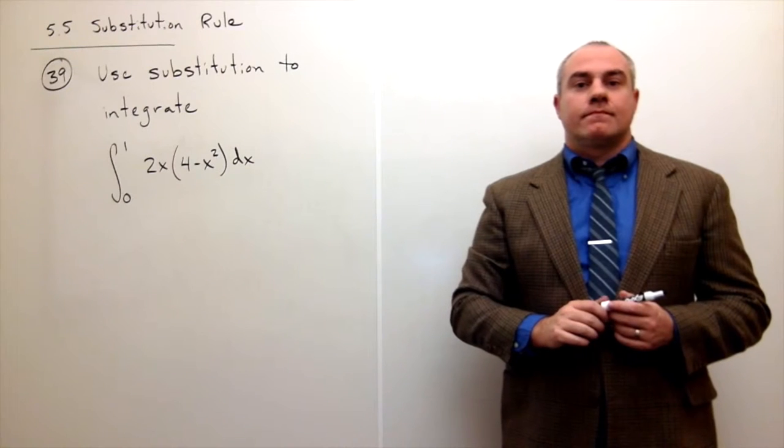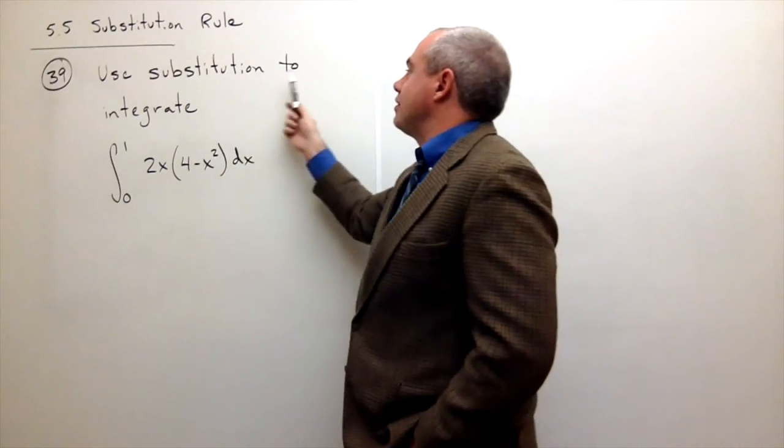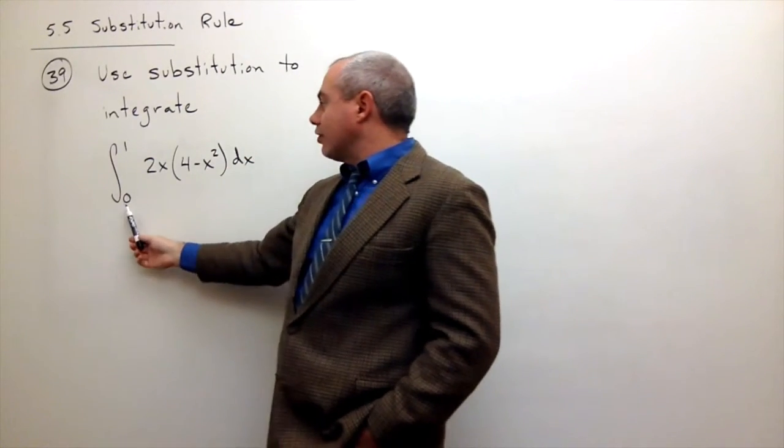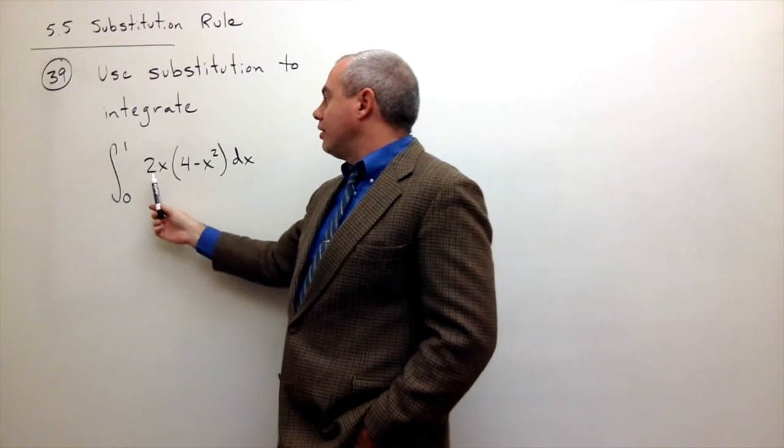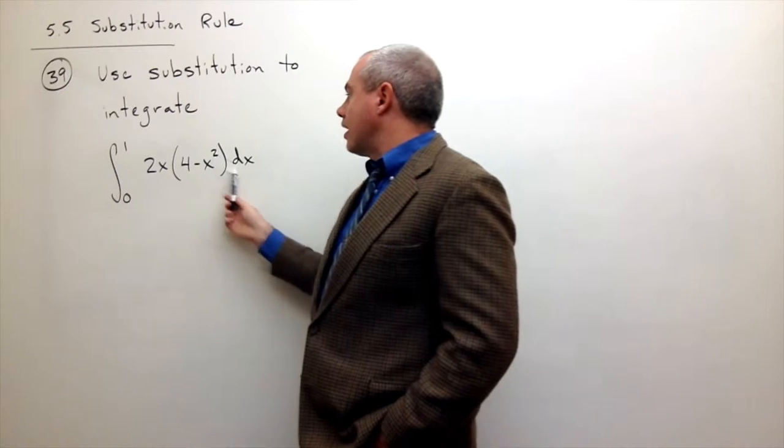I'm the calculus professor and today we'll be talking about u-substitution. In problem number 39, we'd like to use substitution to integrate the integral from 0 to 1 of 2x times 4 minus x squared dx.